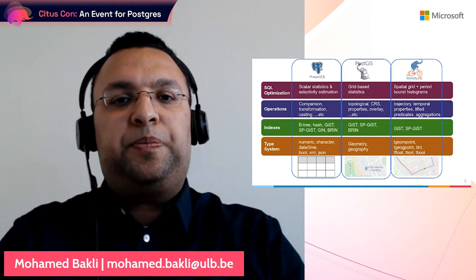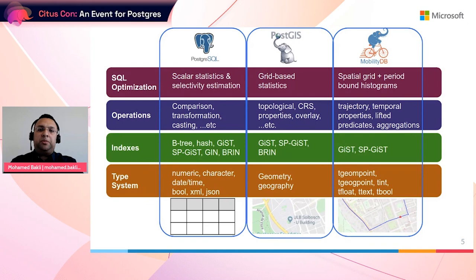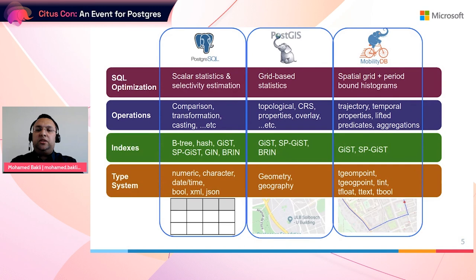MobilityDB also supports other temporal types for base types like temporal int, temporal float, temporal text, and temporal boolean. For instance, the TFloat can represent temperature that changes over time or the speed of a vehicle. MobilityDB extends the GIST and SP-GIST to index spatial temporal data and provide fast spatial temporal joins. It has functions for trajectory processing, temporal properties, lifted predicates, and temporal aggregations. Finally, it integrates with the SQL query optimizer by providing selectivity estimation functions for temporal types.